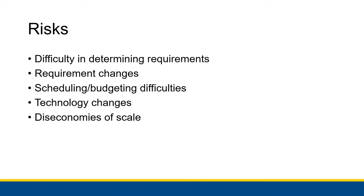There are risks because it is difficult to determine the requirements of a system — what a system is supposed to be able to do. Requirements can change, especially through development. This could partially be because the organization itself has overhauled its competitive strategy, or the people who would be working with the new system realize that what they said was important no longer is, for whatever reason. They have to completely change what is important and update those requirements for the system.